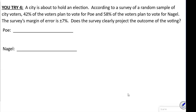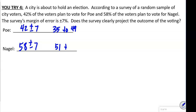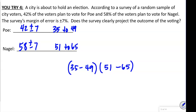Final example: a random sample shows 42% plan to vote for one candidate and 58% for Nagel, with a margin of error of plus or minus 7. For 42%: 35 to 49. For Nagel at 58%: 51 to 65. There is no overlap between 35–49 and 51–65, so this is conclusive — Nagel is predicted to win.